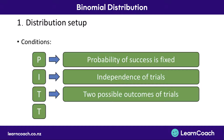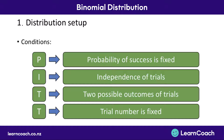T stands for two possible outcomes of trials — for every single trial, there can only be two possible outcomes. The last T stands for the fact that trial number is fixed, meaning there has to be a specific number of trials in the situation; it can't just keep going on forever. It's really important to be familiar with all of these conditions in order to get those higher marks on our exams, as they come up in almost every kind of binomial question.